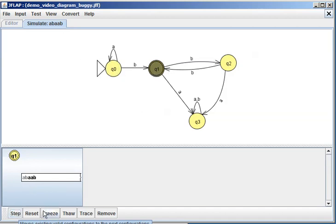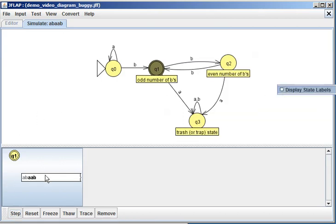So we're going to go to Q1. So we step, and we end up at Q1, and now we need to process an A. So that's going to take us to Q3, actually our trash state. Maybe I should show you those labels.